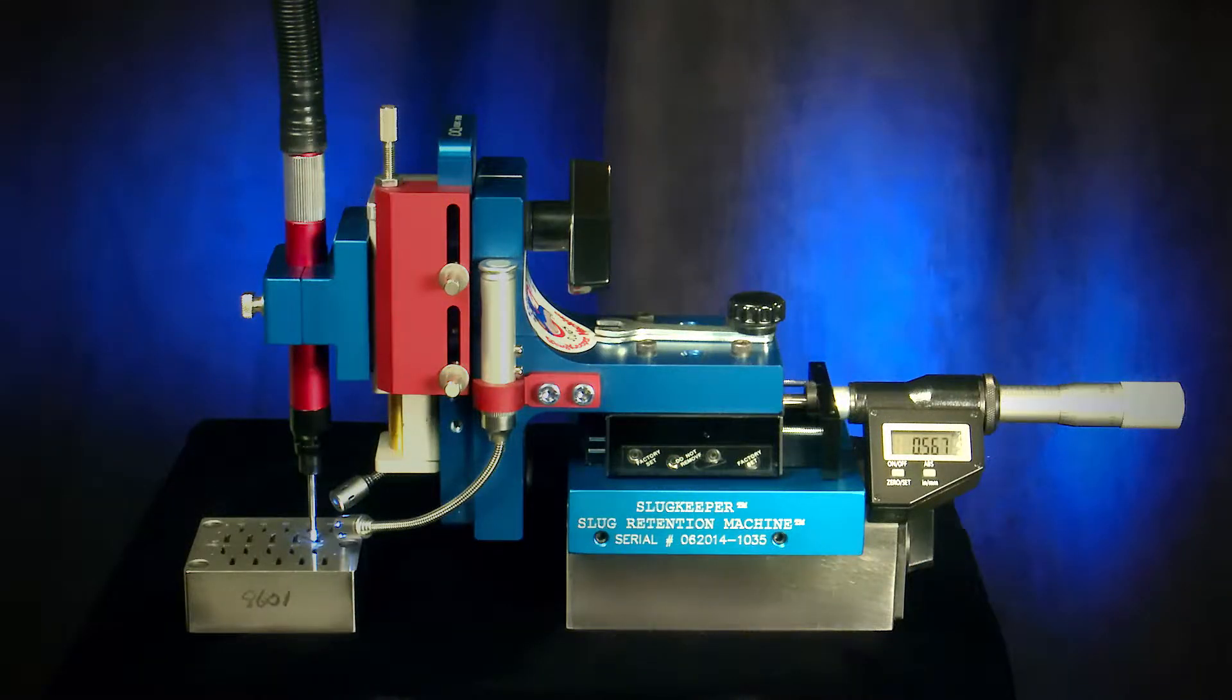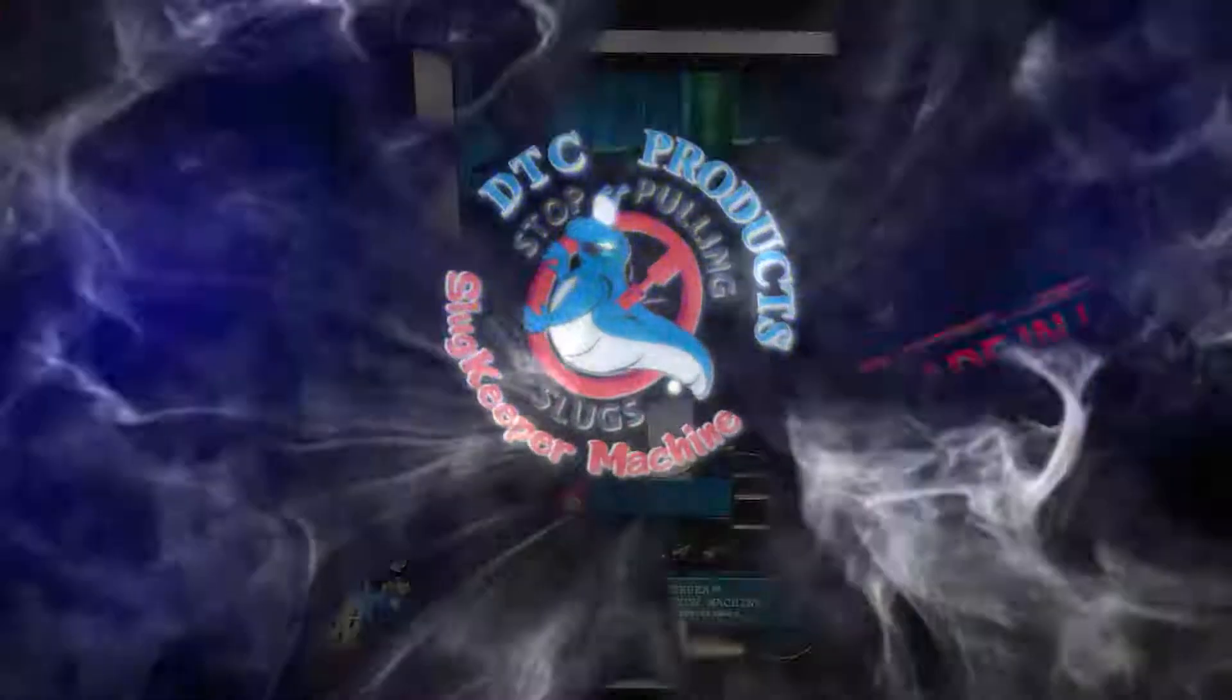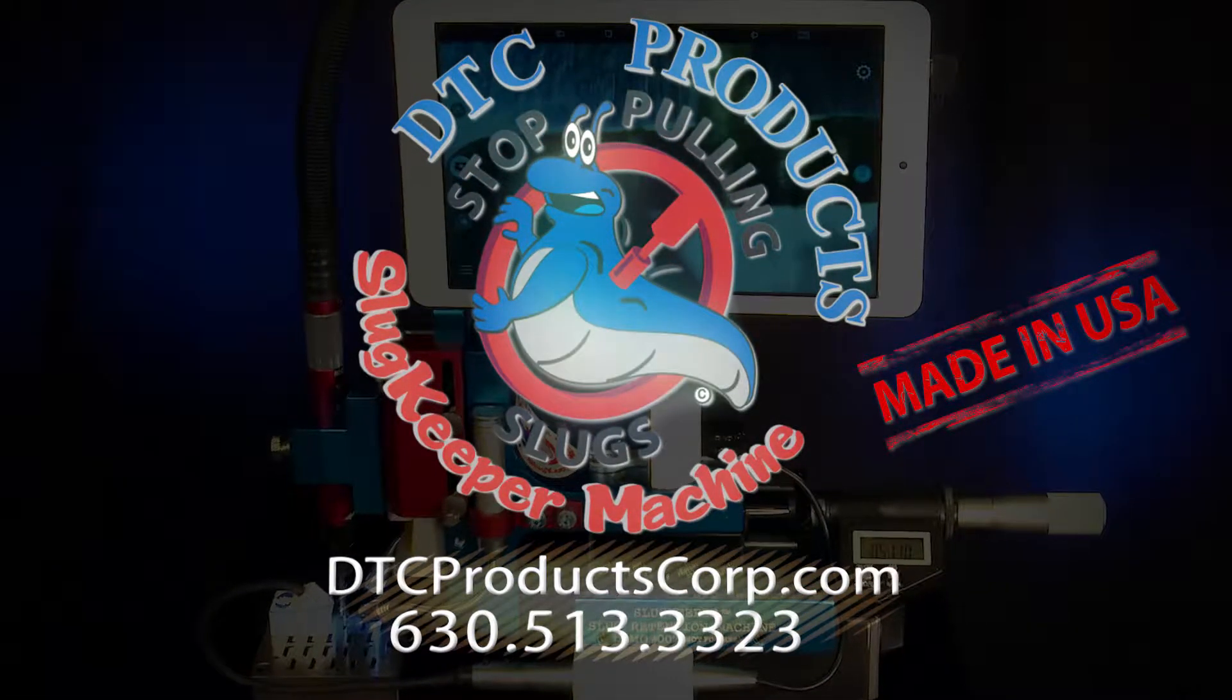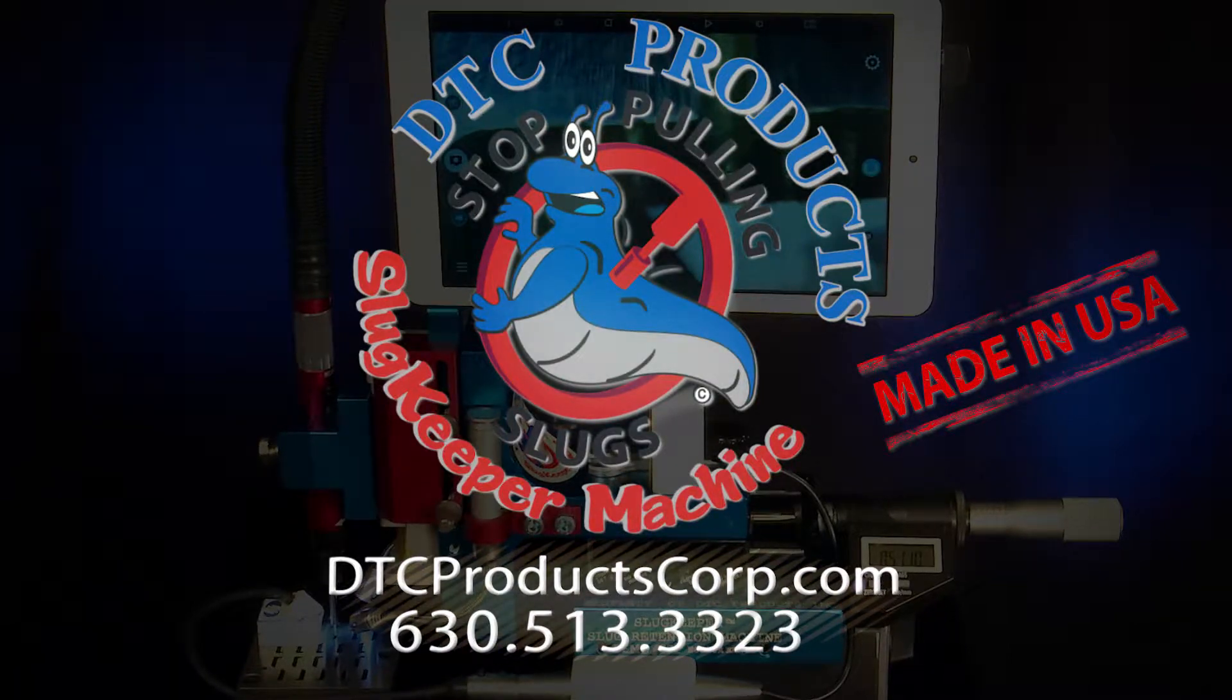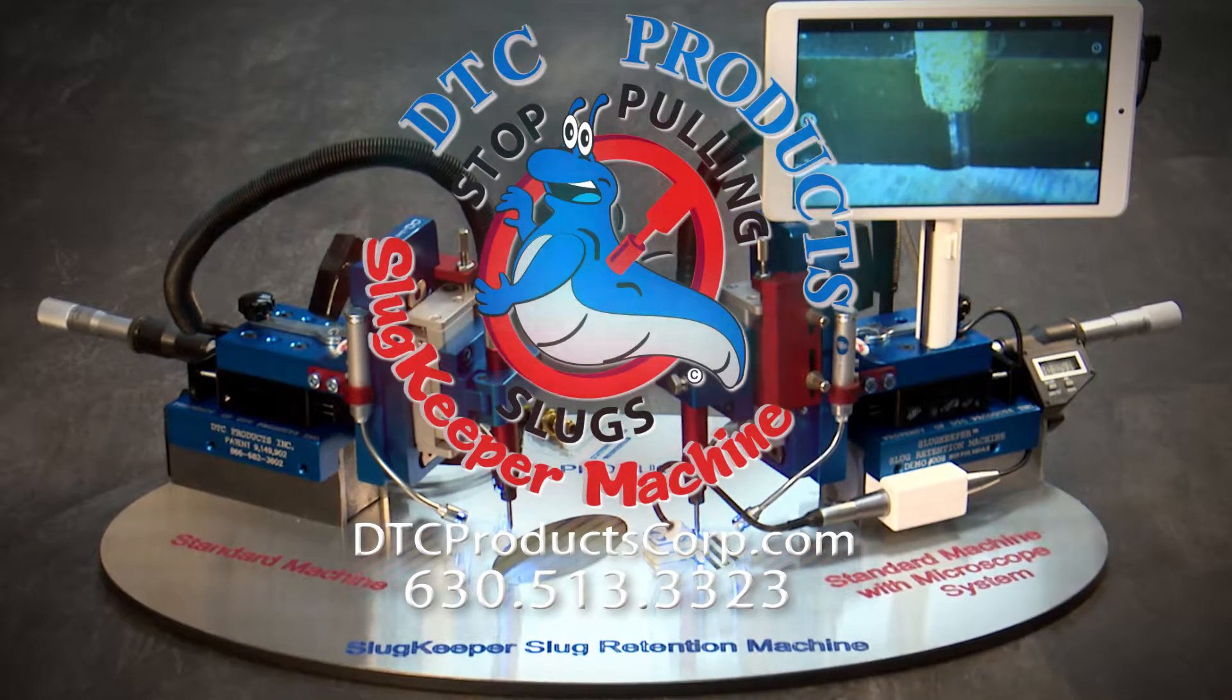Put an end to the costly delays, lost productivity and rejected parts. Call DTC Products today and learn how you can order your own slug retention machine. Like slugs in the garden, slugs in the stamping process are part of the landscape. Keep them under your control with the slug keeper.